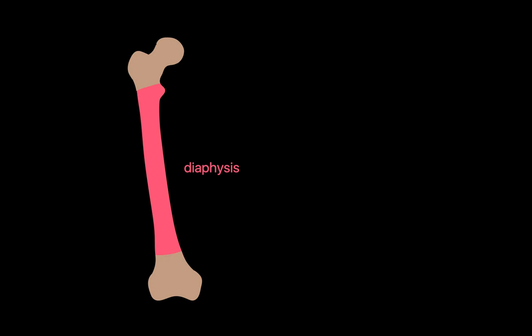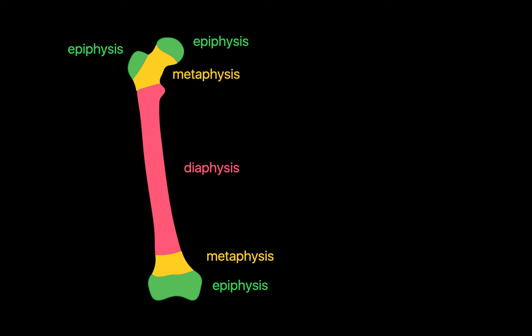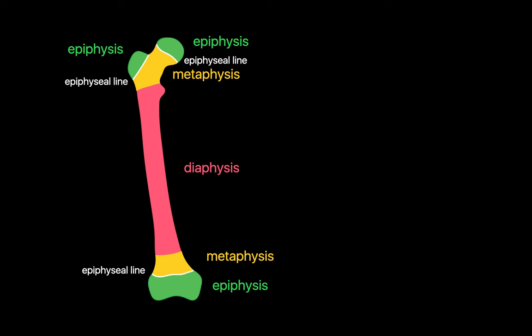Long bones are generally divided into three main regions. The diaphysis is the shaft of the bone. The epiphyses are the rounded ends of the bone, and usually the sites where the bone will articulate with other bones. The metaphyses are the regions between the diaphysis and epiphyses. In children, a cartilage layer known as the epiphyseal plate or growth plate exists at each metaphyseal-epiphyseal junction and is responsible for bone lengthening during growth. In adulthood, the epiphyseal or growth plates ossify into epiphyseal lines.